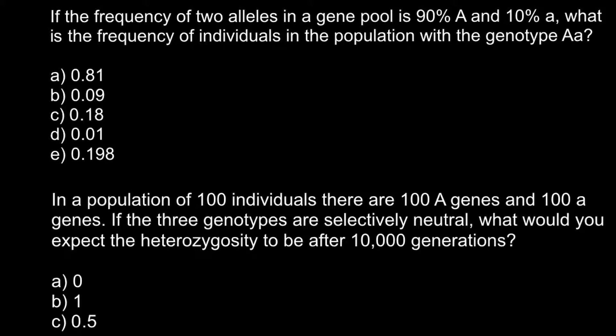If the frequency of the two alleles in the gene pool is 90% for the dominant allele A, and 10% for the recessive allele a, what is the frequency of the individuals in the population with a heterozygous genotype?